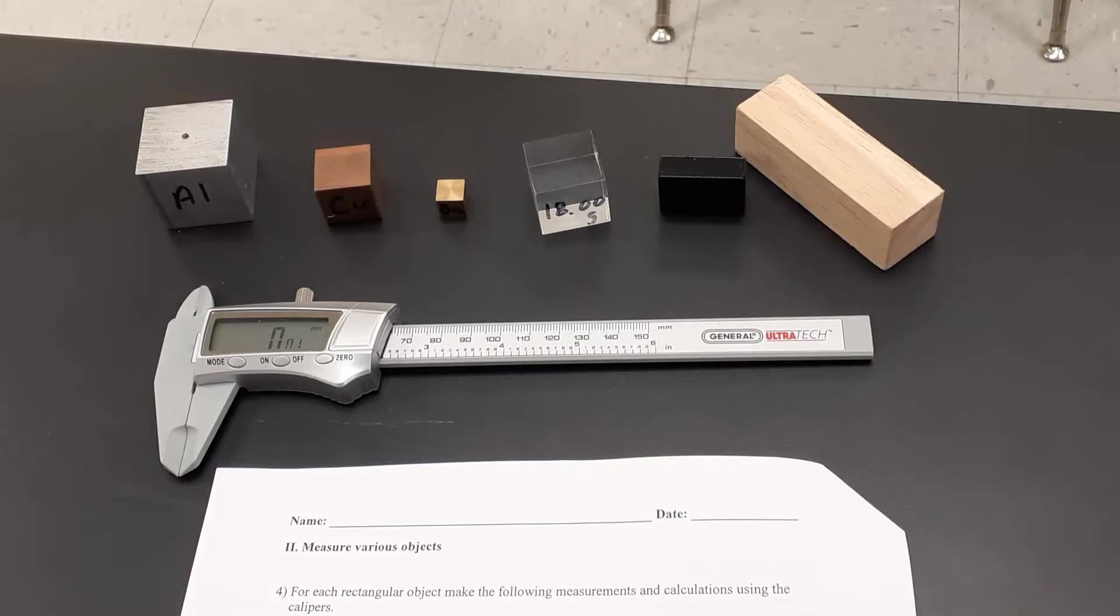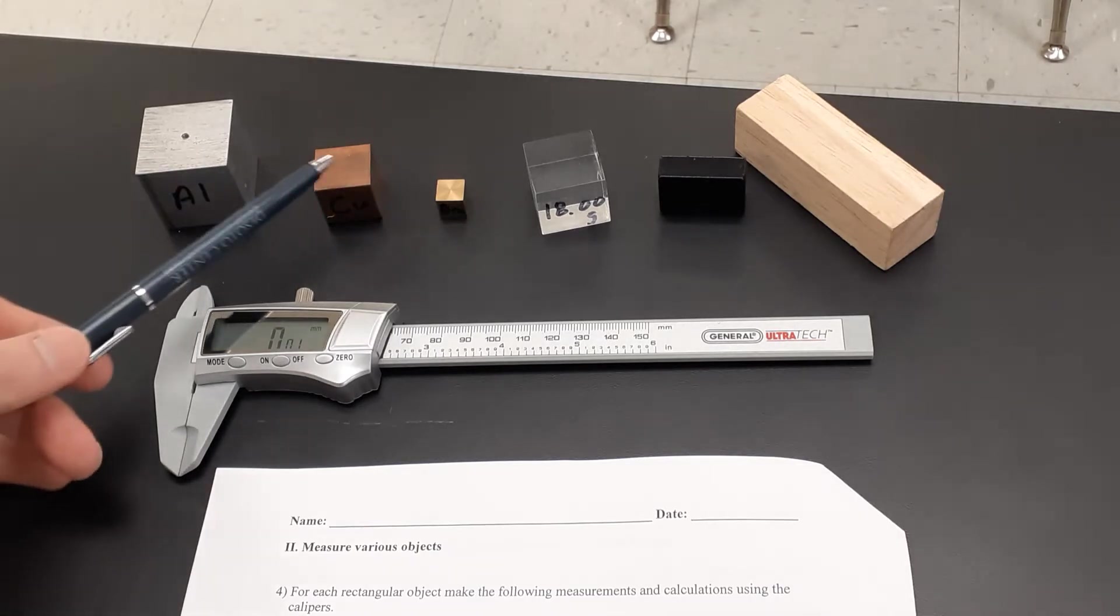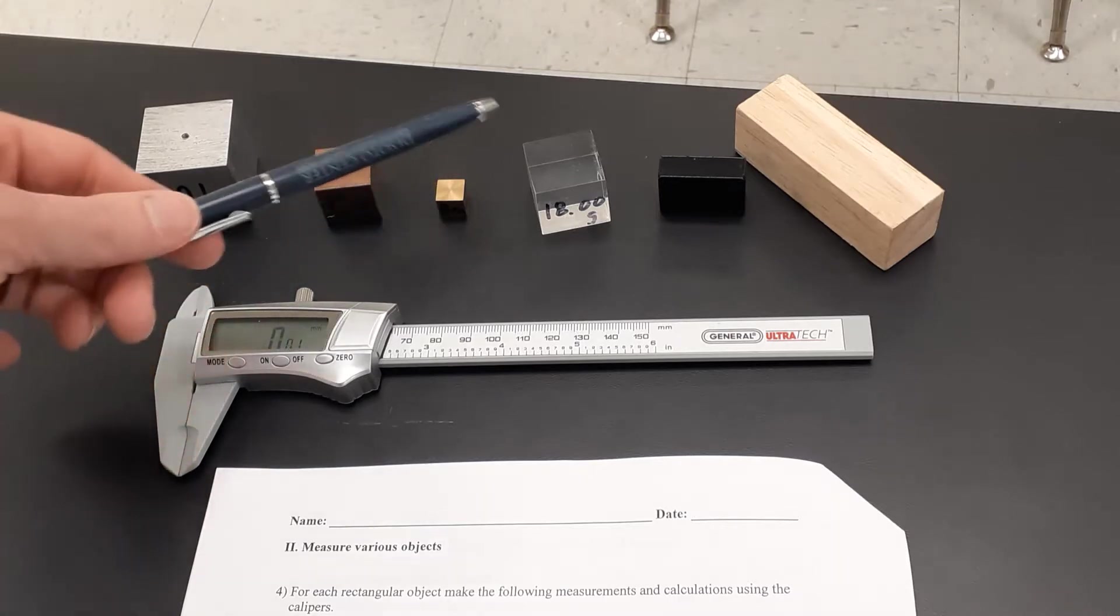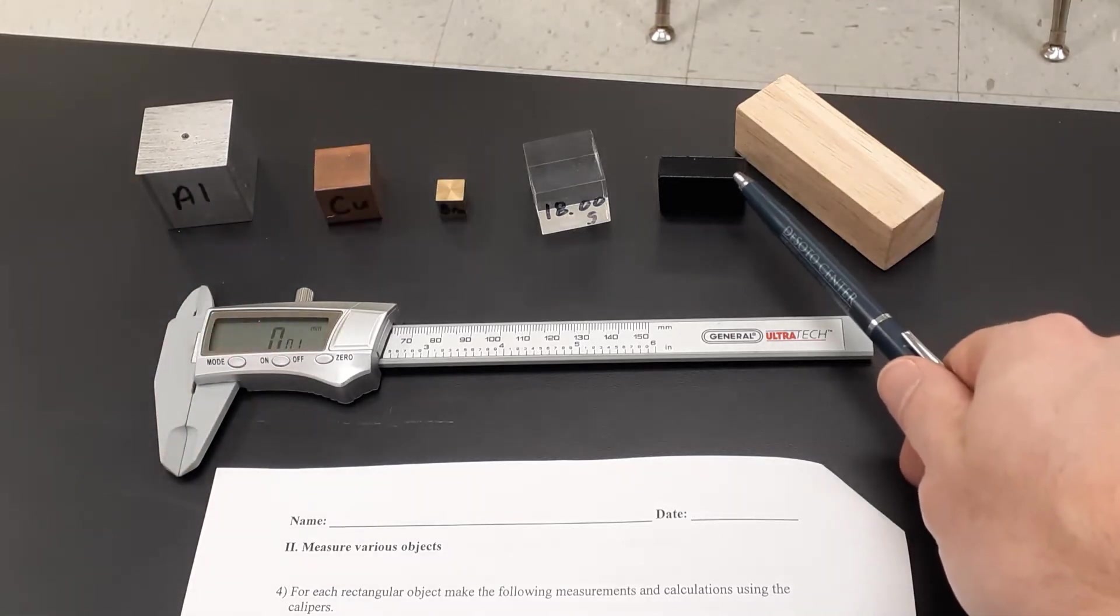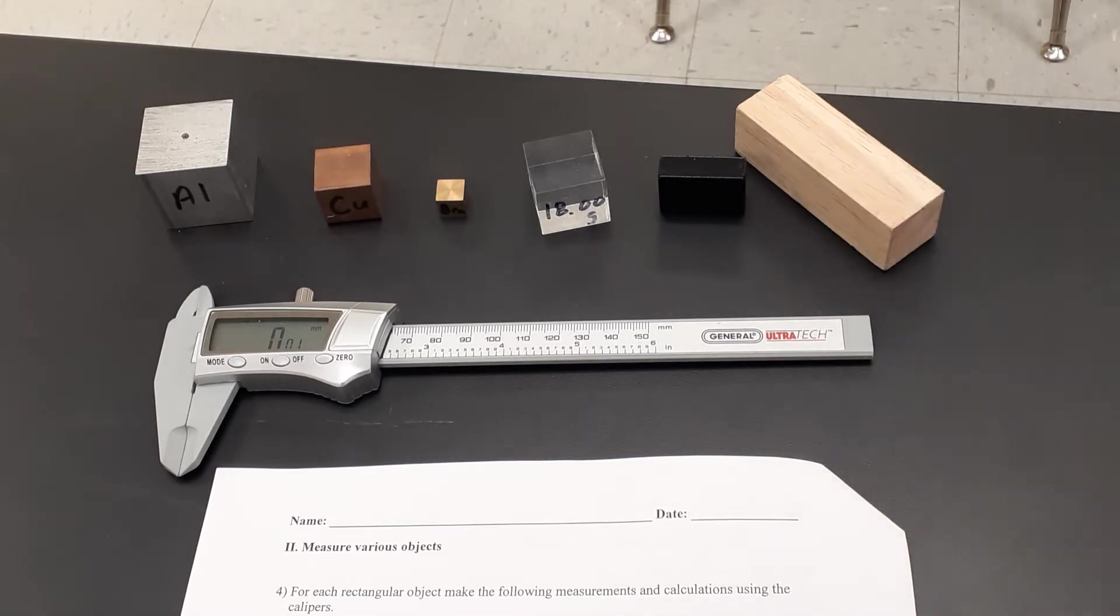Now the next thing will be measuring several different objects. We're ready to start measuring your cubic style objects first. So we have a block of aluminum, a block of copper, a piece of brass, a plastic cube, a steel cube that's painted black, and then a wooden cube. Of course these don't have to be perfect cubes, like a square, they're just rectangular shapes.